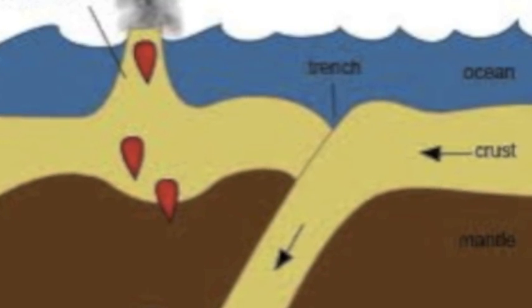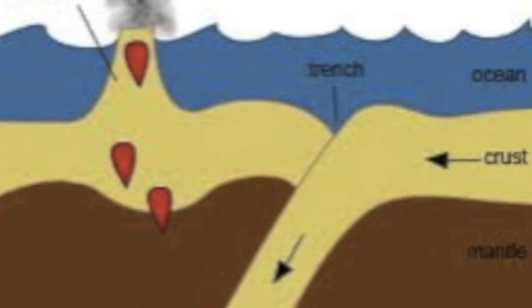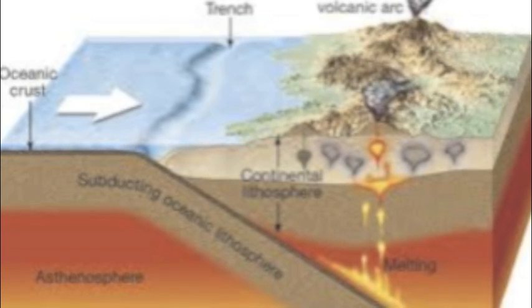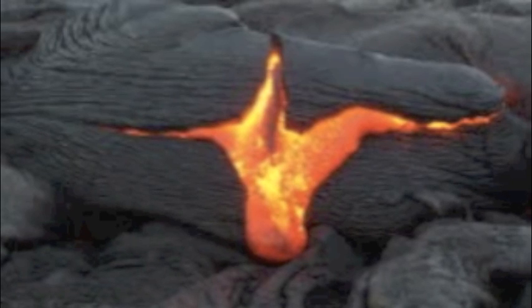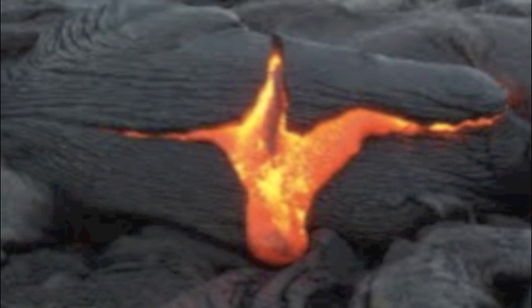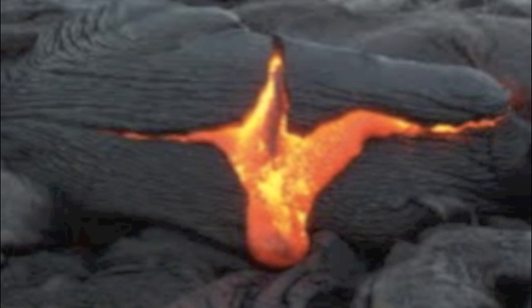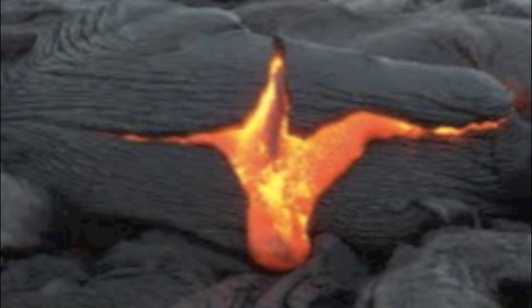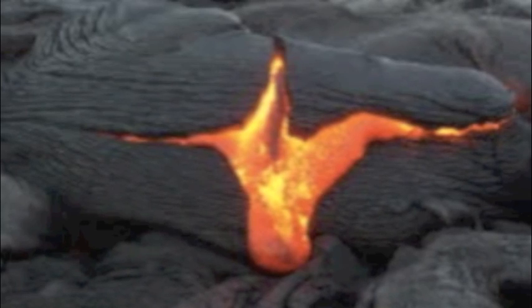Scientists also know how volcanoes form and why they erupt. Volcanoes form due to the movement of tectonic plates. When a tectonic plate sinks, it sinks down into the mantle and becomes very hot — so hot, in fact, that the rock melts. This molten rock will gradually make its way up to the surface of the earth through a series of cracks. When it reaches the surface, we refer to it as lava. As layer upon layer of lava builds up, a volcano is formed.